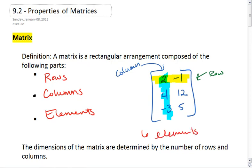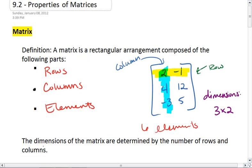Those elements are 2, negative 1, 4, 12, negative 3, and 5. This matrix is composed of 3 rows and 2 columns. So, its dimensions are a 3 by 2 matrix. The dimensions of this matrix are 3 by 2. And that does lead us to a discussion of dimensions. The dimensions of the matrix are determined by the number of rows and the number of columns.